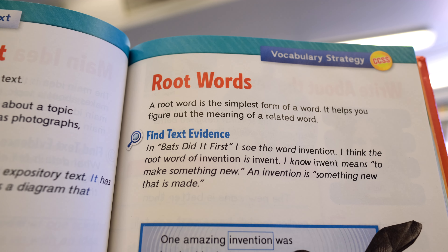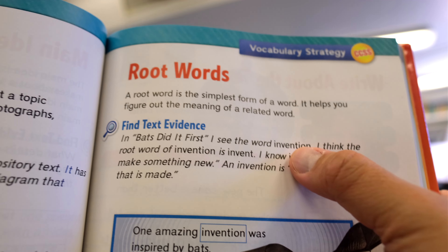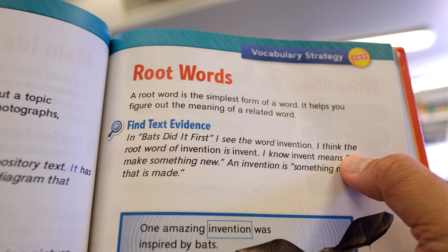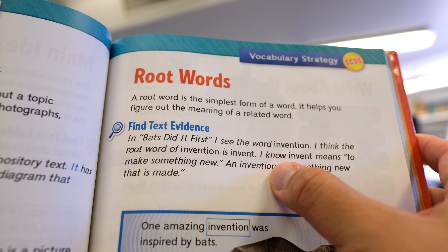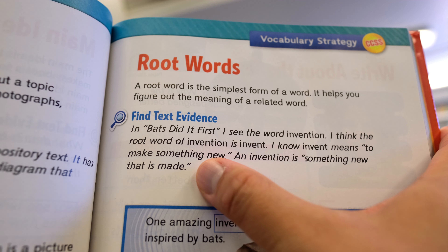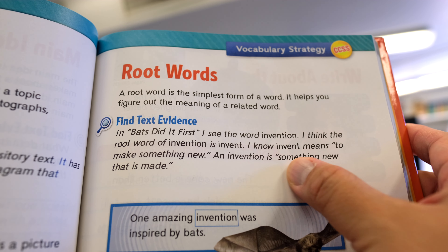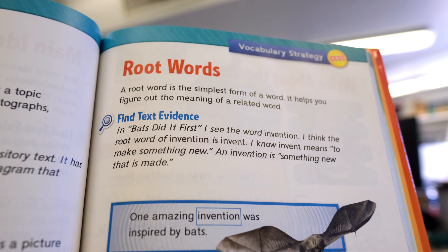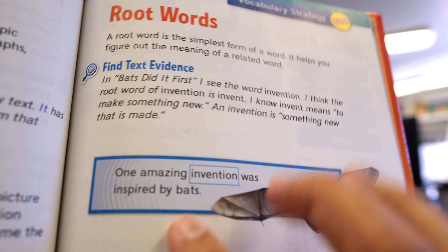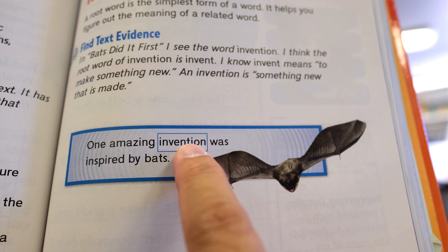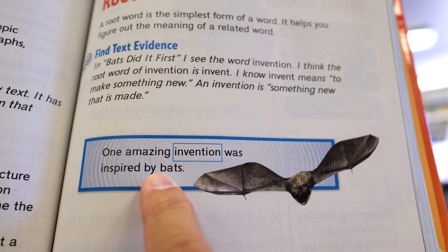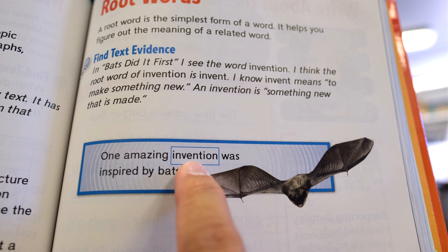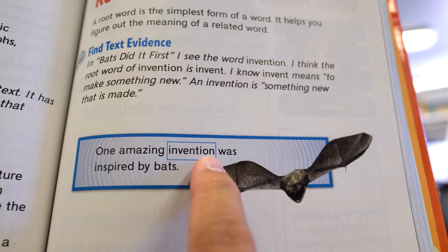In 'Bats Did It First,' I see the word invention. I think the root word of invention is invent. I know invent means to make something new. An invention is something new that is made. Here's the sentence: 'One amazing invention was inspired by bats.' If I look at this longer word invention, I can see the word invent inside it.